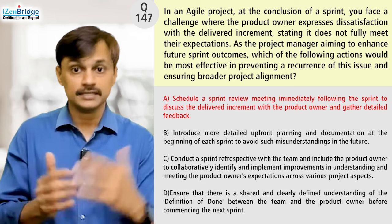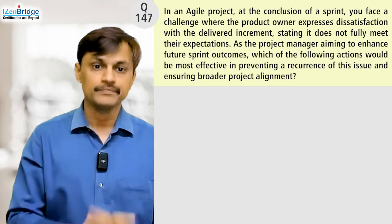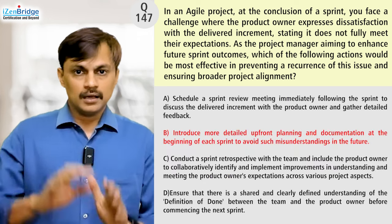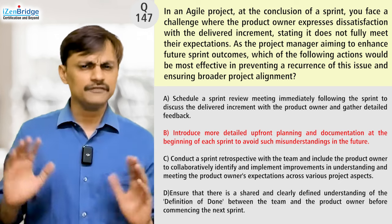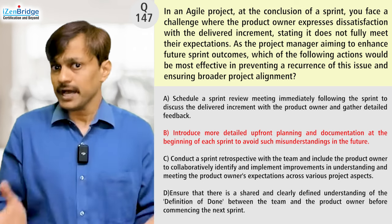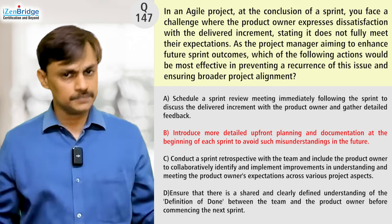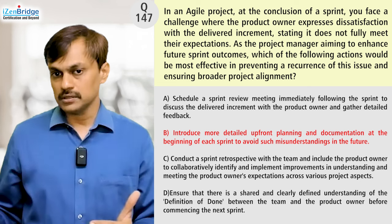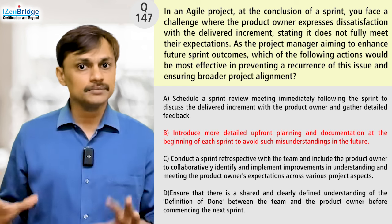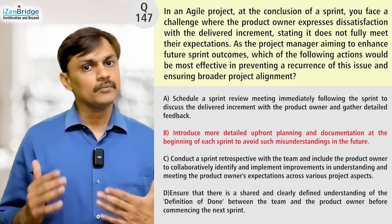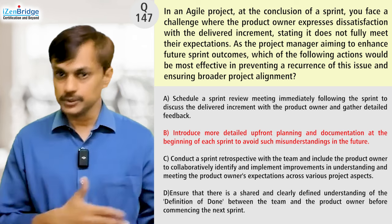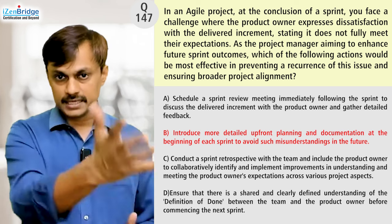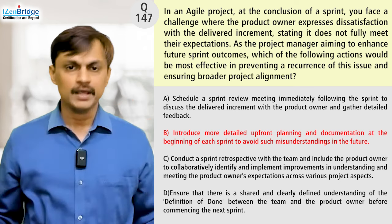This question is primarily checking whether we understand the difference between sprint review and sprint retrospective. Option B: Introduce more detailed upfront planning and documentation at the beginning of each sprint to avoid misunderstandings in the future. Detailed documentation generally shows an anti-pattern of agile. Even in a hybrid approach, it might help — but how do you know that's the only solution? There could be more frequent feedback meetings during the sprint, or we could agree on a definition of ready. So detailed documentation is negative anyway, and there are other reasons to avoid jumping to B.